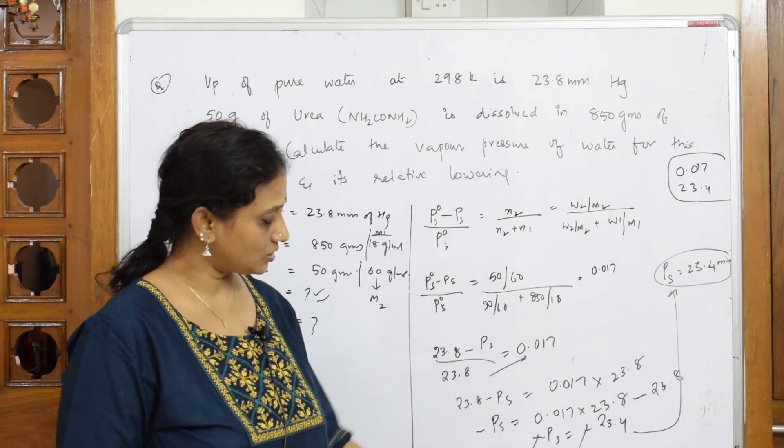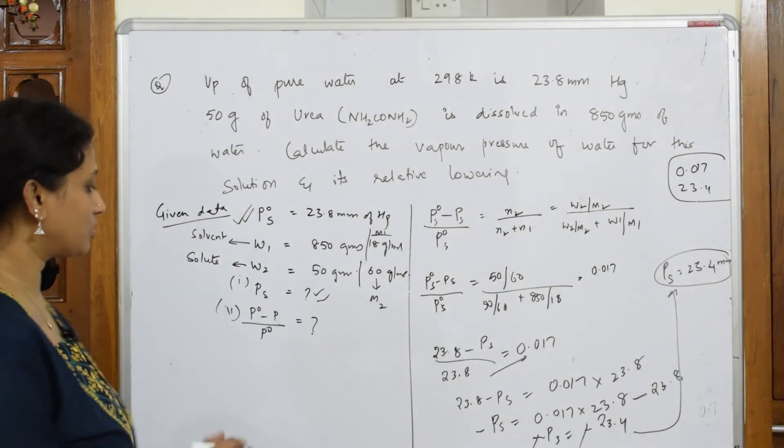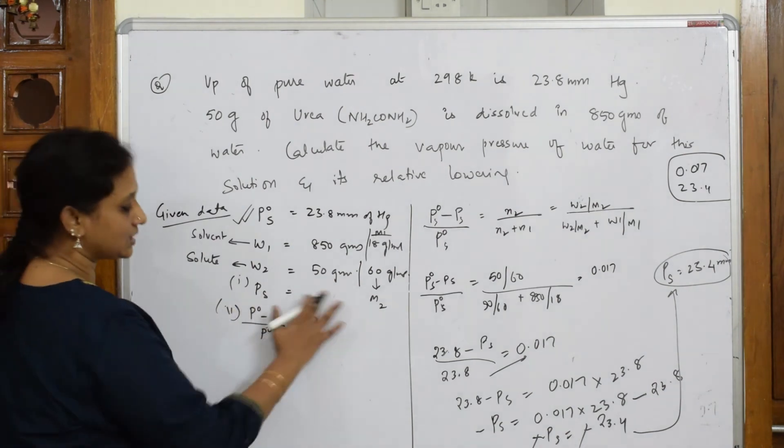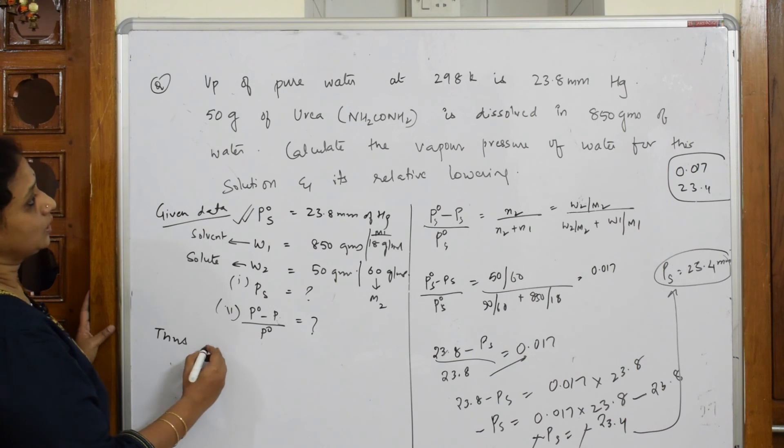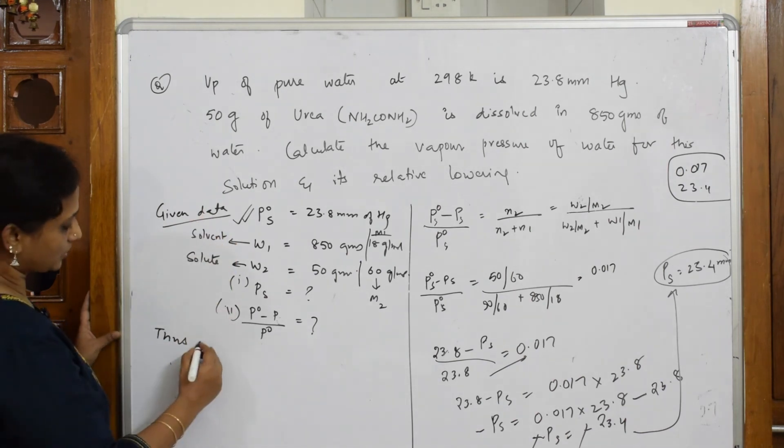Then we very well know this is the answer. I substituted the values: w2 weight is given by the molecular weight, w1 weight is given 850 grams by the molecular weight. I solved it. Then finally, after solving everything, I got PS. So two important answers - what are the two important answers I got?